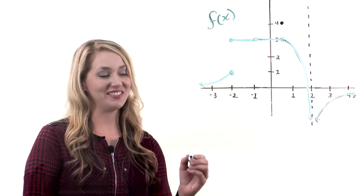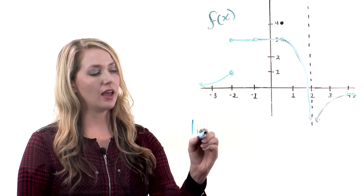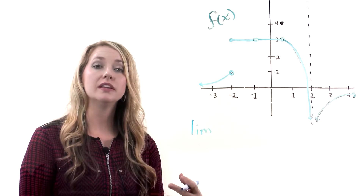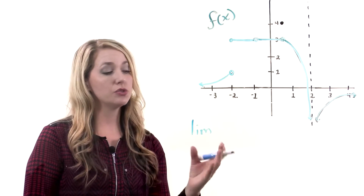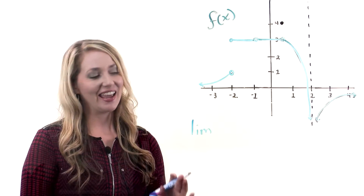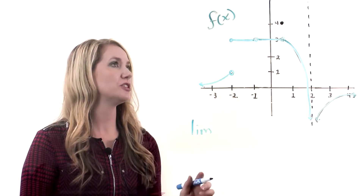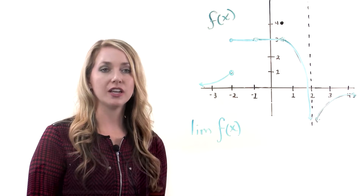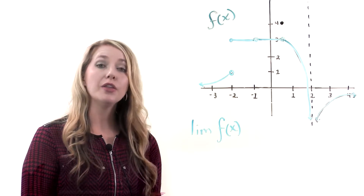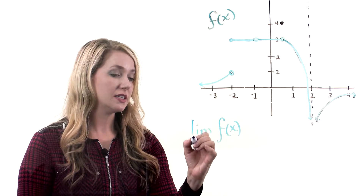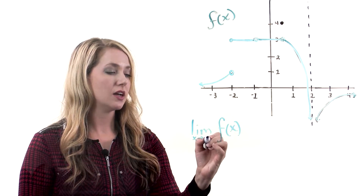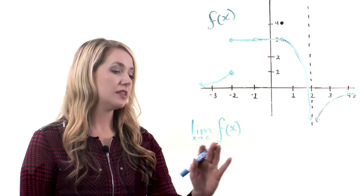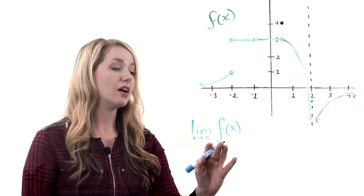First, some notation. If I write LIM, that means limit, and it's actually an operator. It works like a function — it is applied to something. So just writing LIM is nonsense; it needs to be applied to something. Since the function we're looking at is our f of x function, we're applying our limit to f of x. The other piece of notation you need is what x is getting close to. Here c is a constant number, so this is read: the limit as x approaches c of f of x.